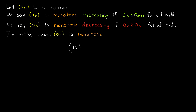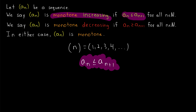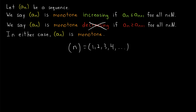Here's another example: consider the sequence where the nth term is equal to n. Is this sequence monotone? Indeed, this sequence is monotone — it happens to be increasing because each term a_n is one less than the next term, so certainly every a_n is less than or equal to a_{n+1}. It's certainly not decreasing because, for example, the first term a_1 is less than the next term a_2, and in a decreasing sequence, every term has to be greater than or equal to the next one.